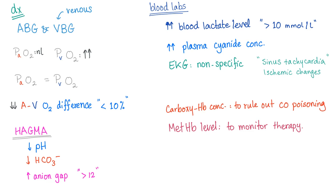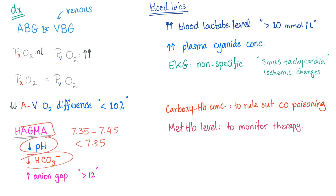High anion gap metabolic acidosis results from lactic acidosis. pH is low — less than 7.35 (normal 7.35–7.45). Bicarbonate is decreased. Anion gap is increased, greater than 12. The anion gap is the difference between measured positive ions and negative ions in the blood.